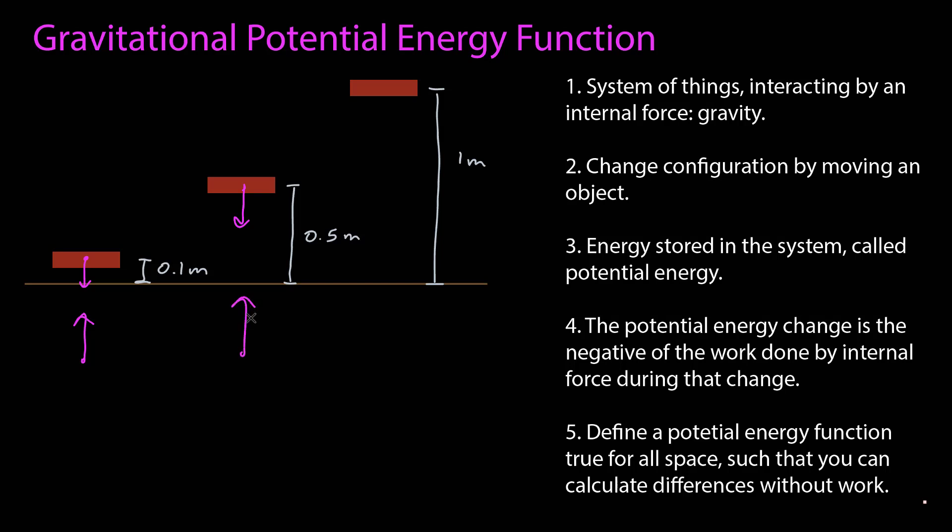We then change the configuration of this system by moving an object. We go in and lift the book 0.1, 0.5, or 1 meter above the Earth. When we do that work, energy is stored in the system, and that energy is called potential energy. The potential energy change we create by moving something can be calculated by taking the negative work done by the internal force during that change.